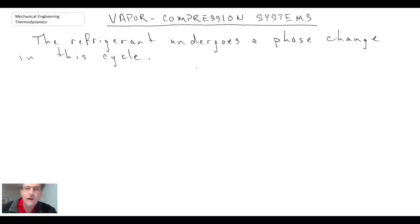What happens here is the refrigerant undergoes a phase change as part of the cycle. We'll begin by looking at a process schematic as well as a process diagram for the vapor compression cycle.